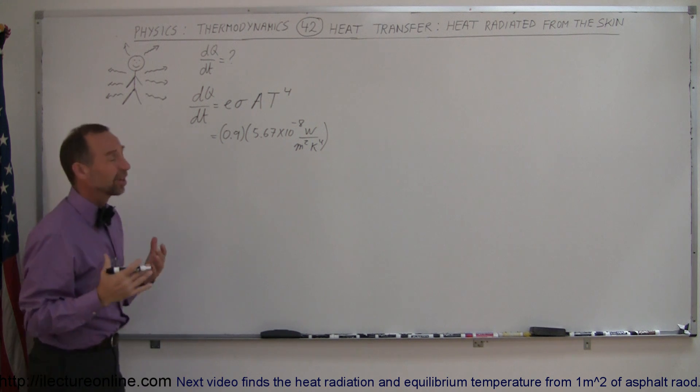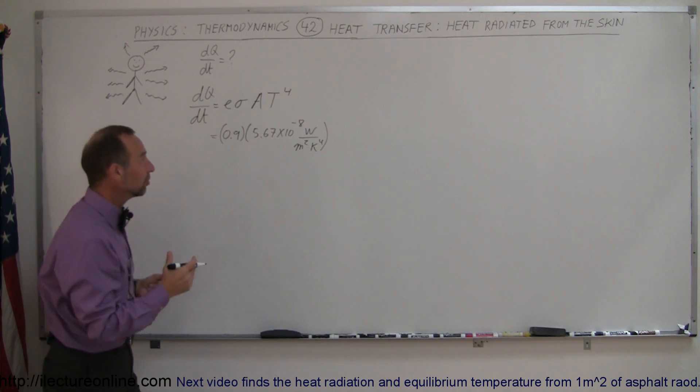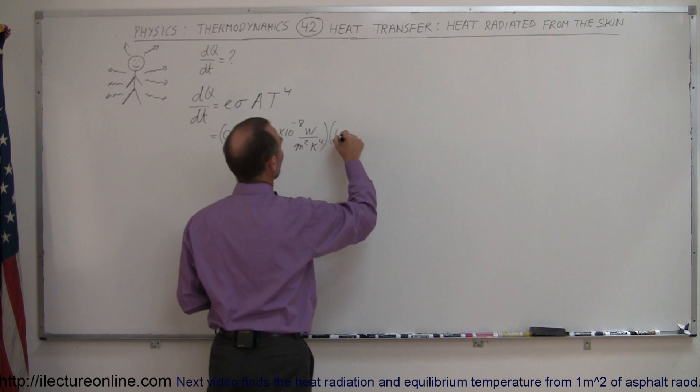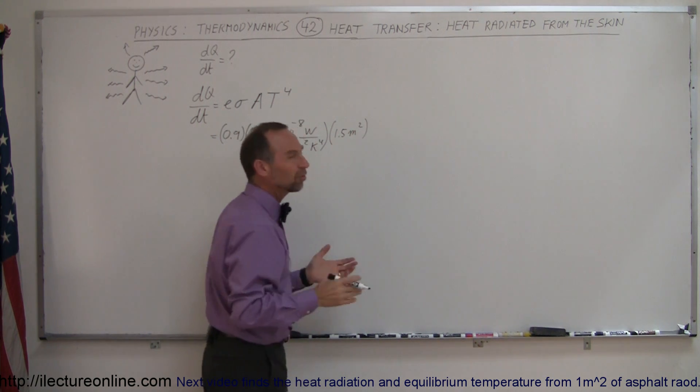The surface area of the skin of a typical human body is about 1.5 square meters. So 1.5 meters squared, not just an approximation, just to give us a feel for what it is equal to.